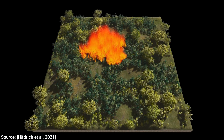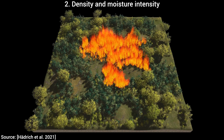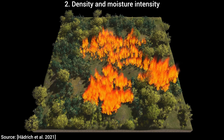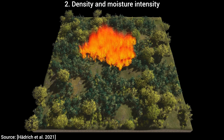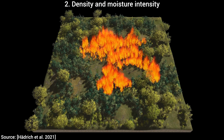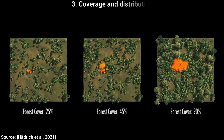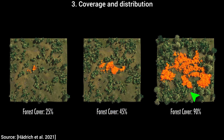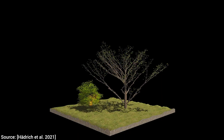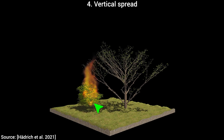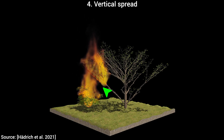Second, it takes into consideration the density and moisture intensity of different tree types. For instance, you see that the darker trees here are burning down really slowly — that is because these trees are denser birches and oak trees. Third, the distribution of the trees also matters. Of course, the more area is covered by trees, the more degrees of freedom there are for the fire to spread. And fourth, fire can not only spread horizontally from tree to tree, but vertically too. Look — when a small tree catches fire, this can happen.